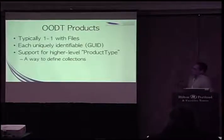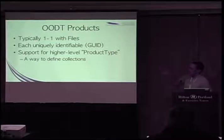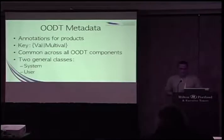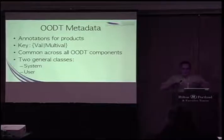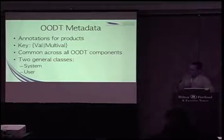When I say products, you can think of it generally as a one-to-one mapping between files, though OODT doesn't require that — a product can be a directory of files. Each product has a globally unique ID, and OODT also has the concept of a higher-level collection of files. OODT has a very simple metadata model which is shared by all of its components, used as a way to persist state across components as data passes through the system.